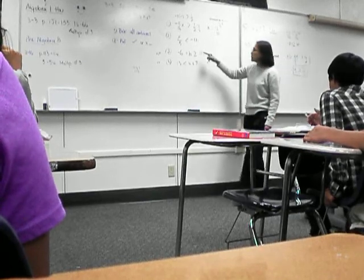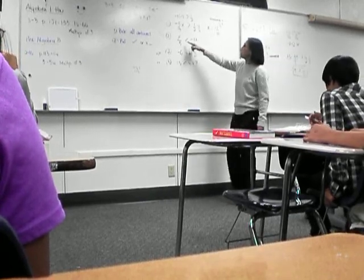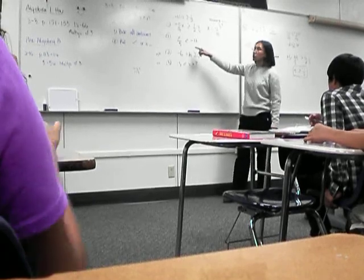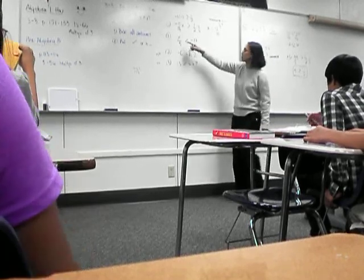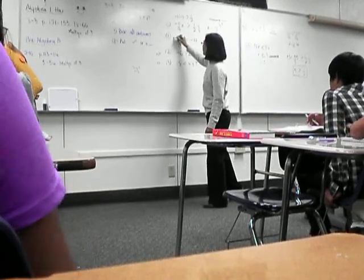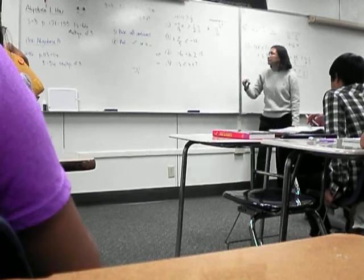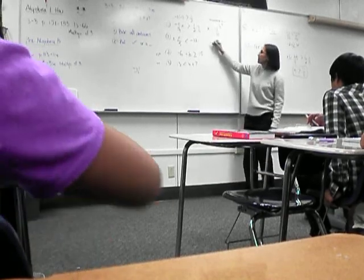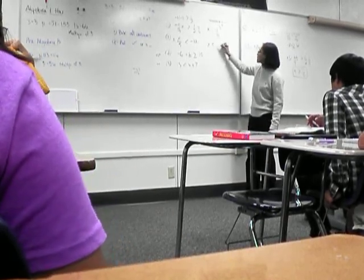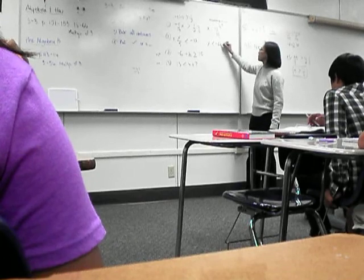The answer to number two. This is straightforward — there's no flipping because you're multiplying both sides by a positive five. So, you should have x is less than negative sixty.